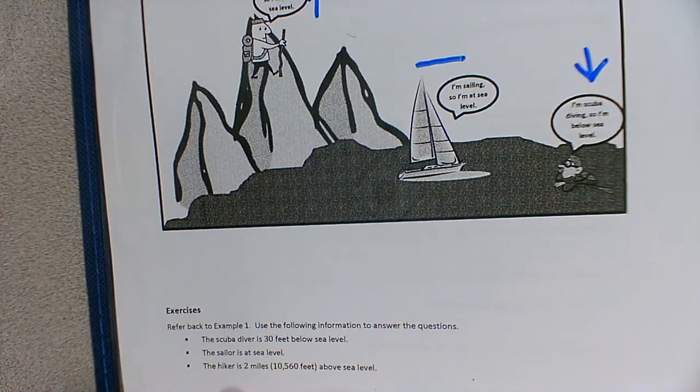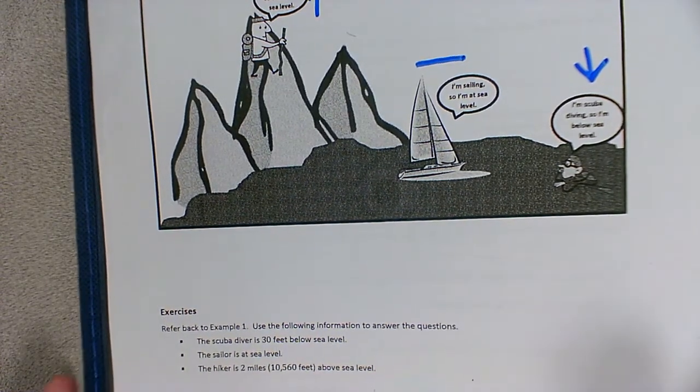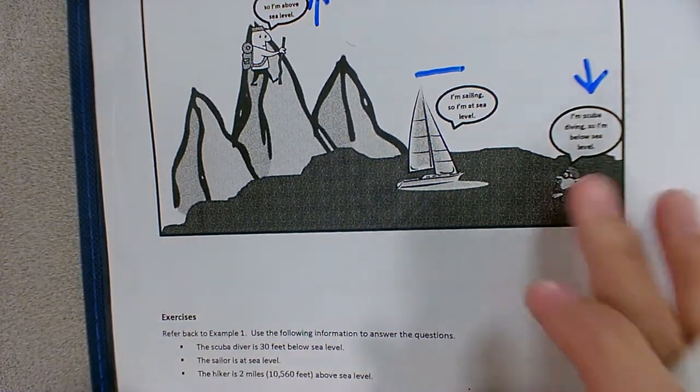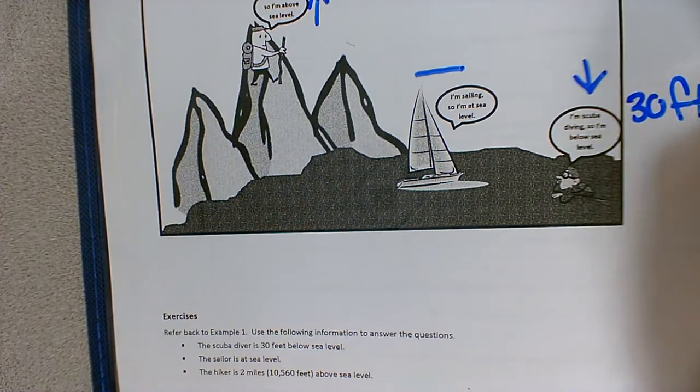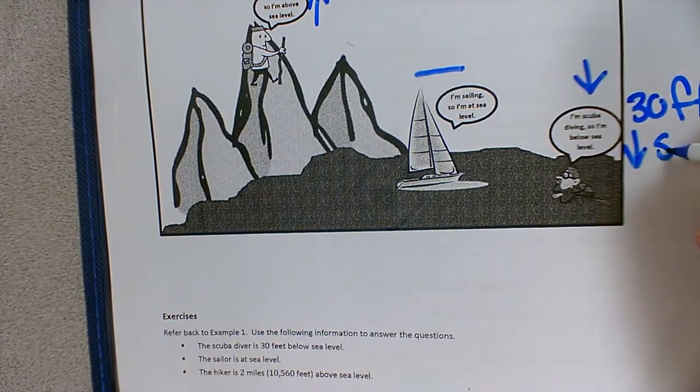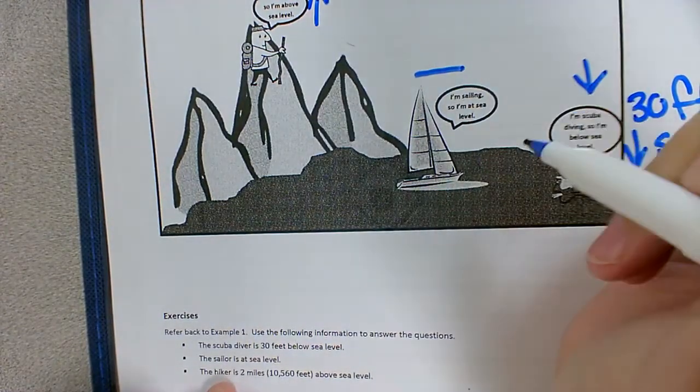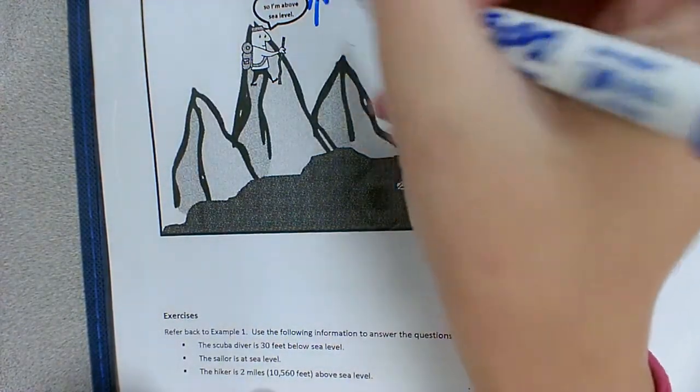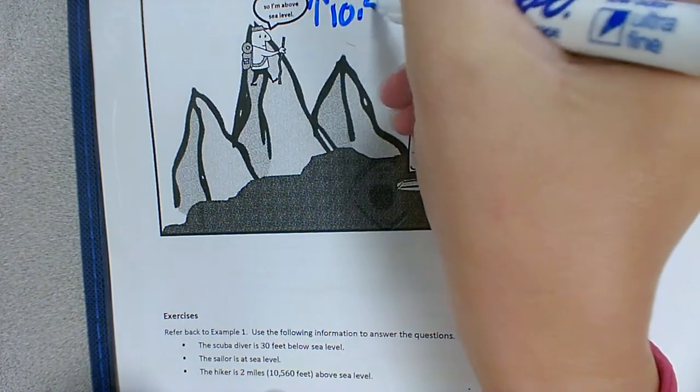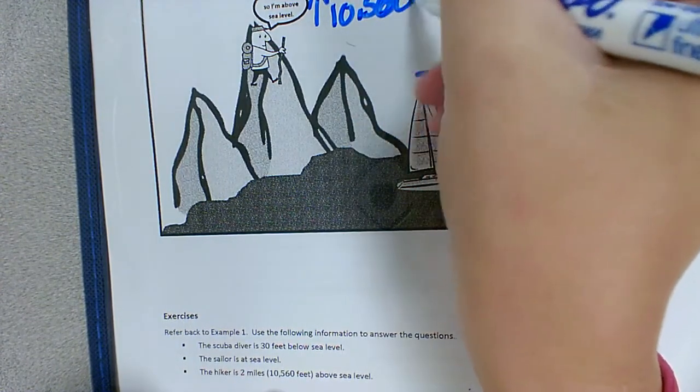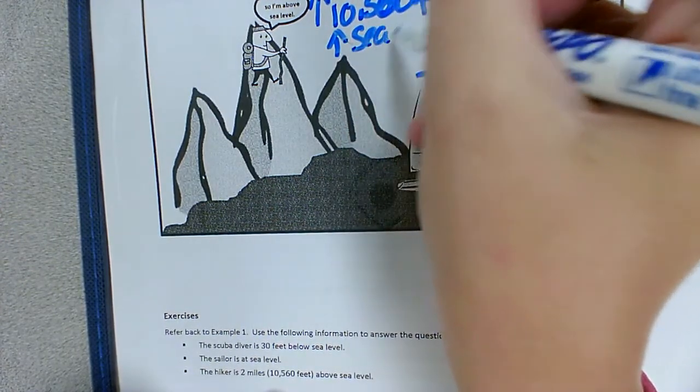If we look at the bottom it says refer back to example one and use the following information to answer the questions. So the scuba diver is 30 feet below sea level. The sailor is at sea level and the hiker is 2 miles or 10,560 feet above sea level.